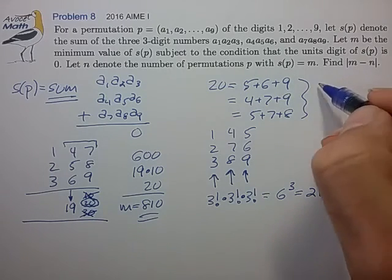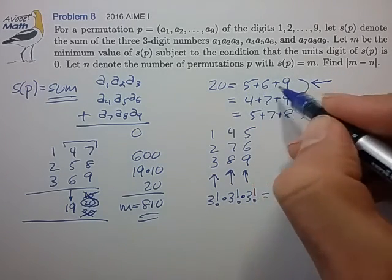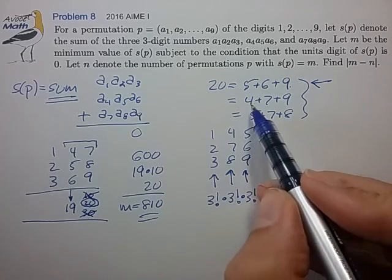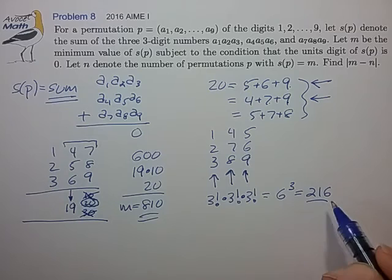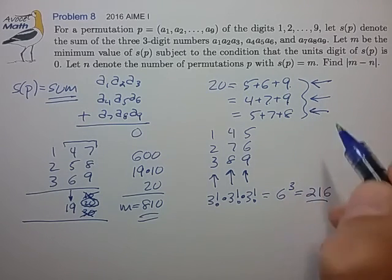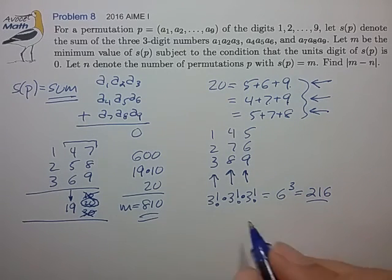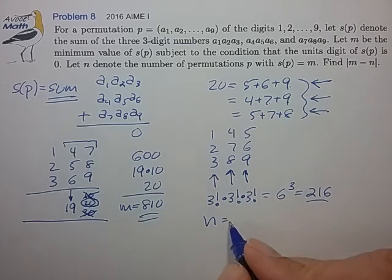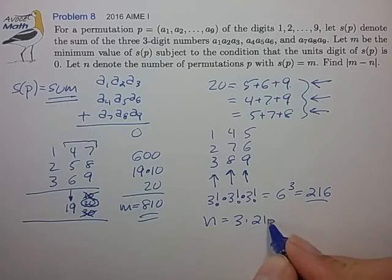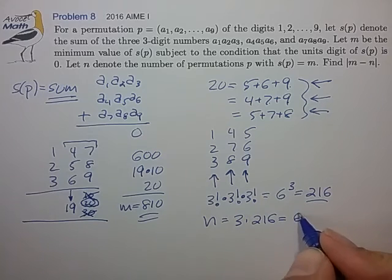And that's for the case of 5, 6, and 9. If we consider the case 4, 7, and 9, that just generates another 216. This is another 216. So it looks like the total number of ways for all of these possibilities is equal to 3 times 216, which is 648.